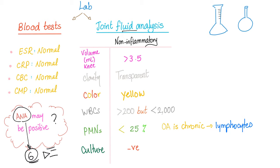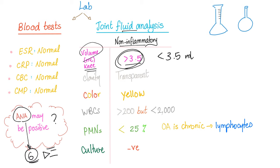Joint fluid analysis: osteoarthritis is non-inflammatory. The volume is more than 3.5 ml in the knee — normal is less than 3.5 ml — because effusion is present. Clarity is transparent, same as normal. Color is yellow — normal is straw-colored or colorless.